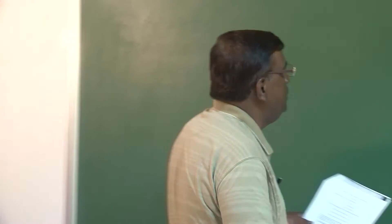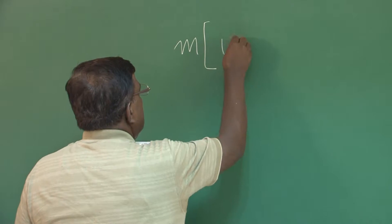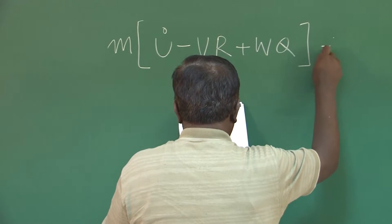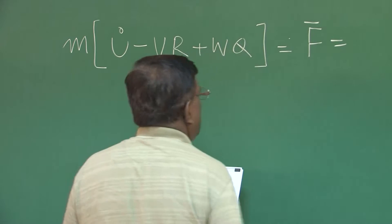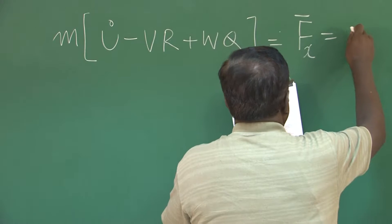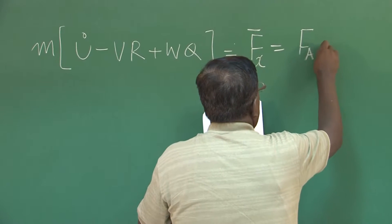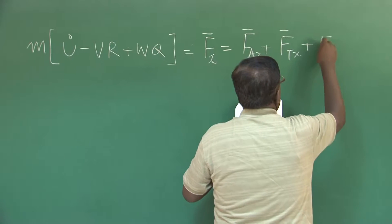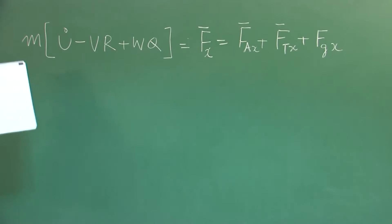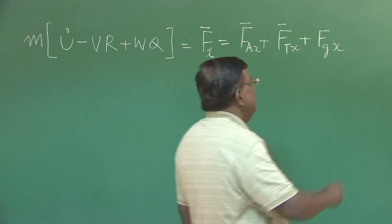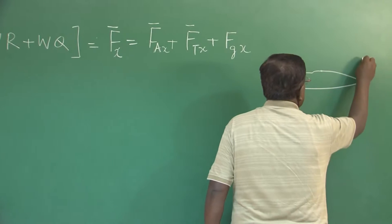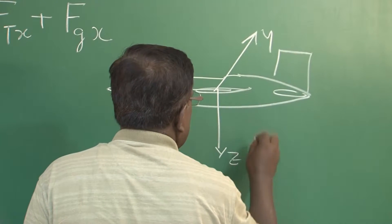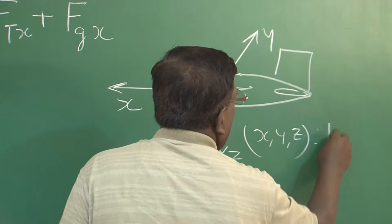Doing that, we found out an equation. I will write one or two of them: U-dot minus V·r plus W·q equals the external impressed force in the x direction, which is composed of the aerodynamic force in x direction, propulsive force in x direction, plus gravitational force in x direction. This is written along the x direction, and please understand this x, y, z are body-fixed axis system.